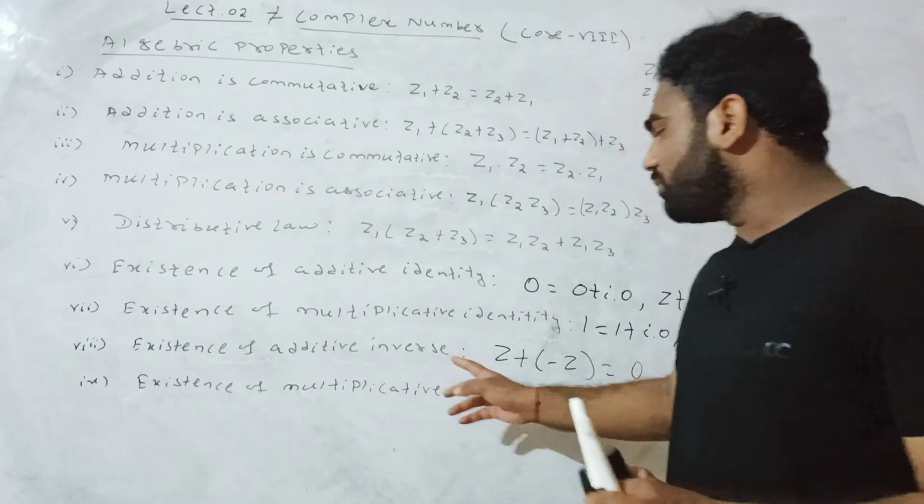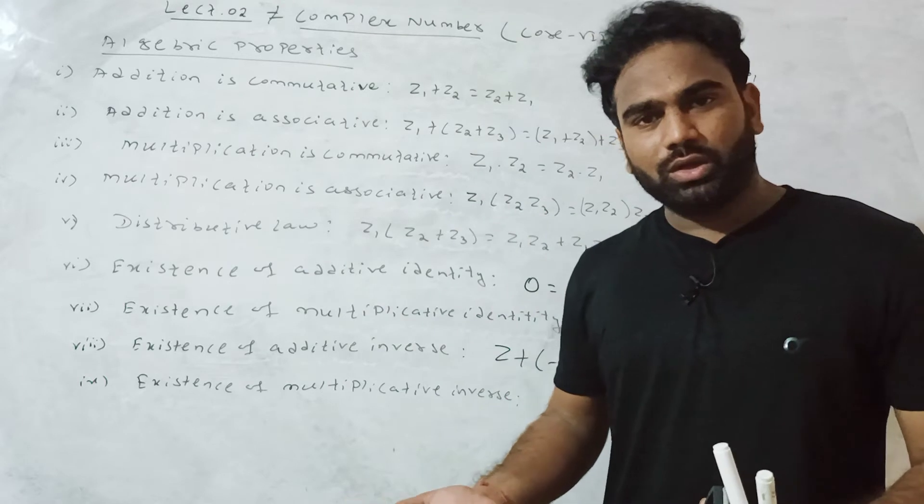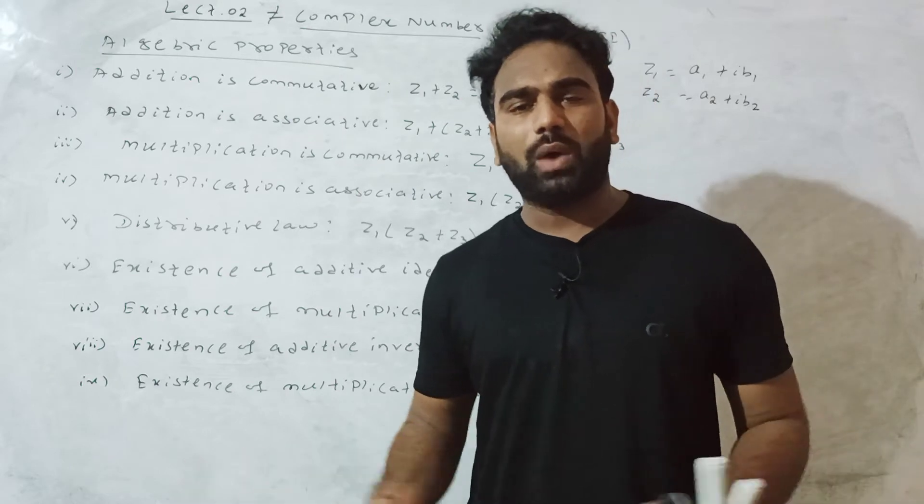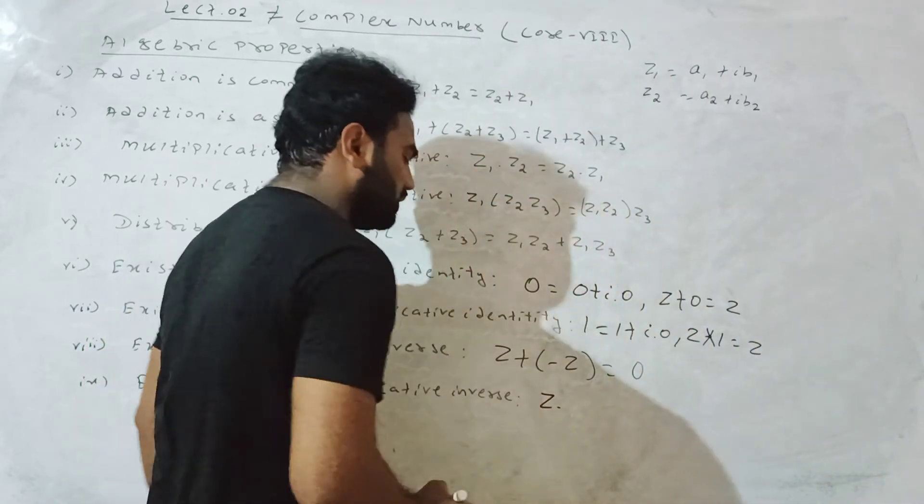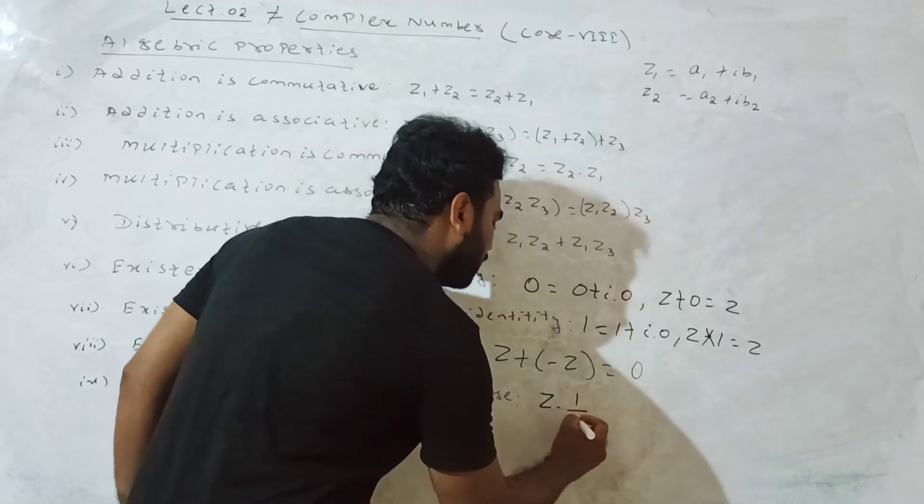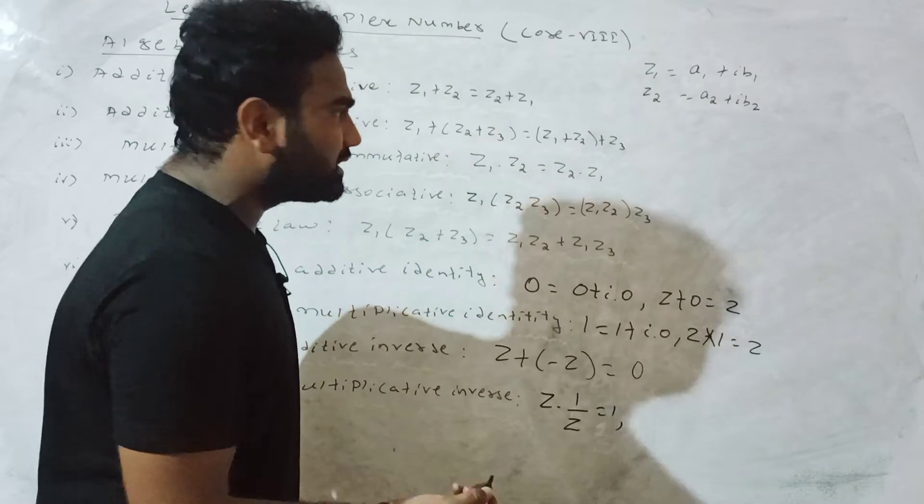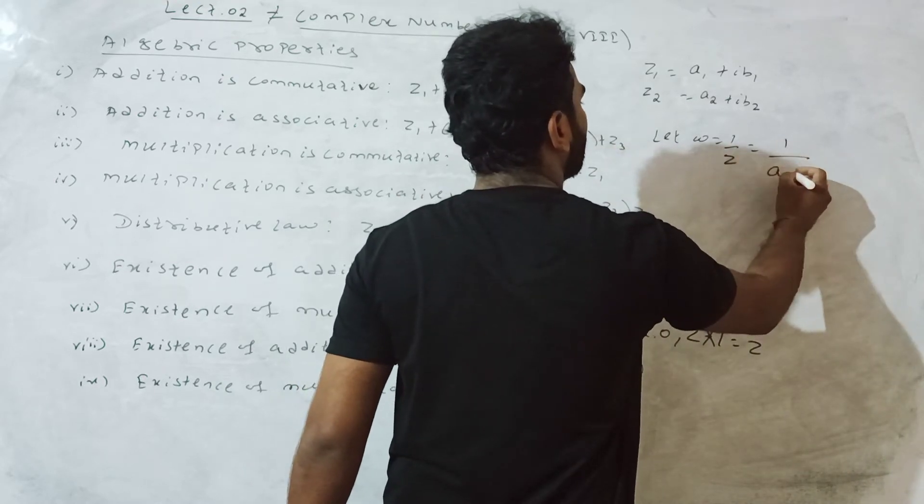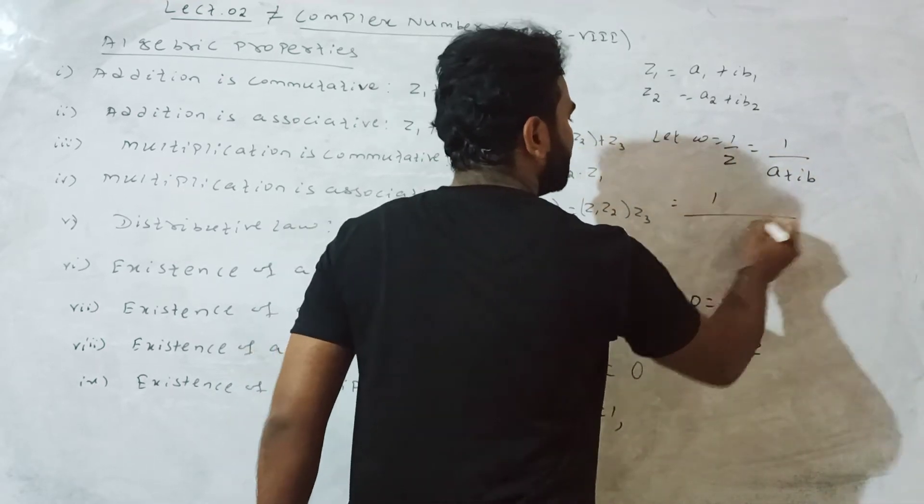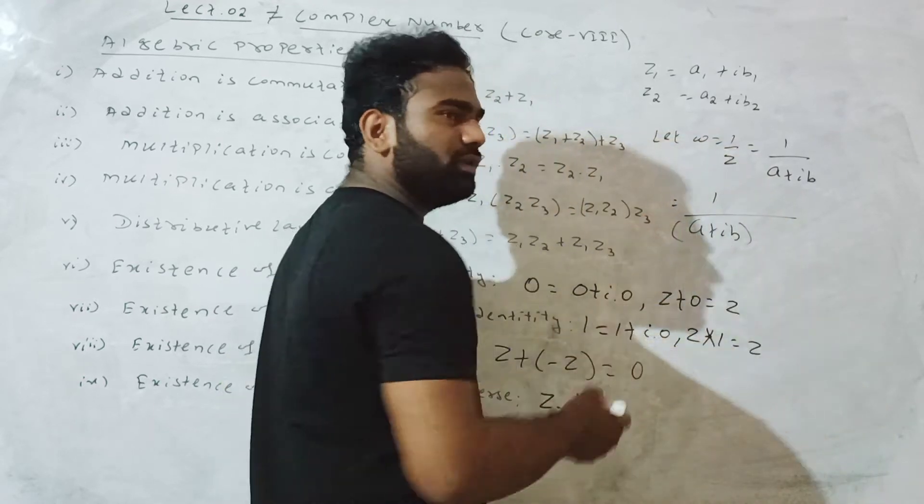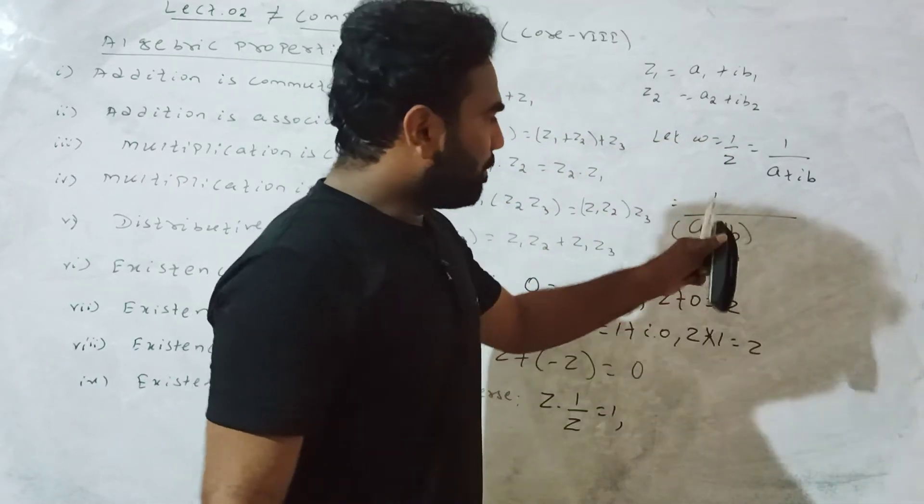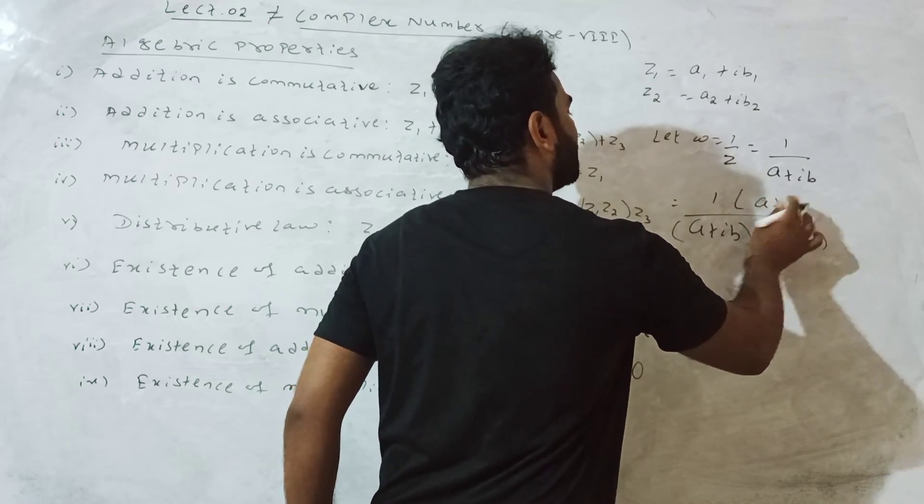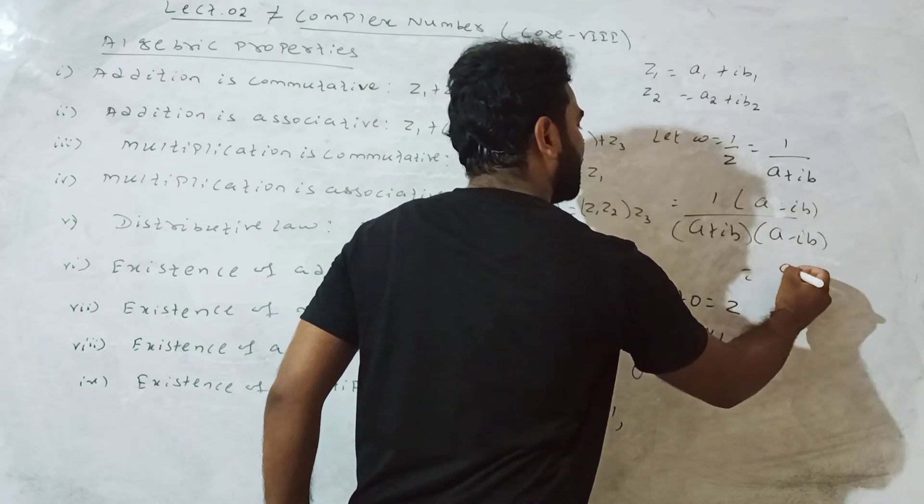Additive inverse. For any complex number, there exists an additive inverse. If z equals a plus ib, then the inverse is minus a minus ib.